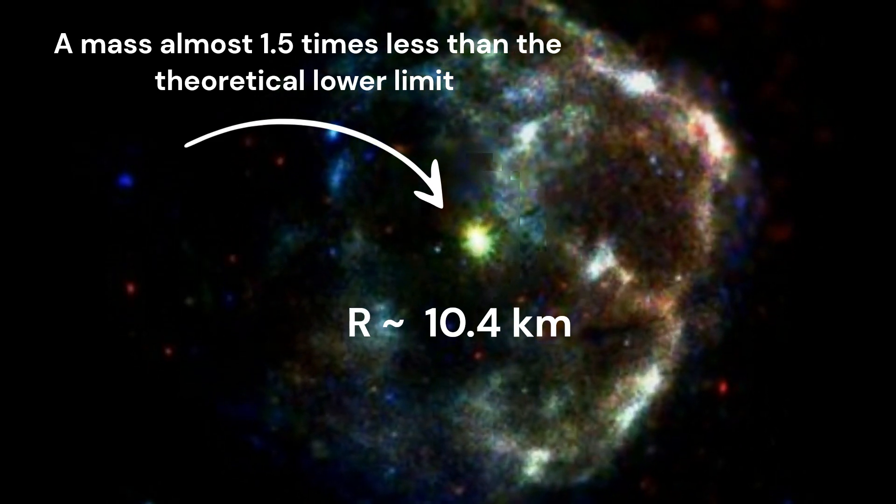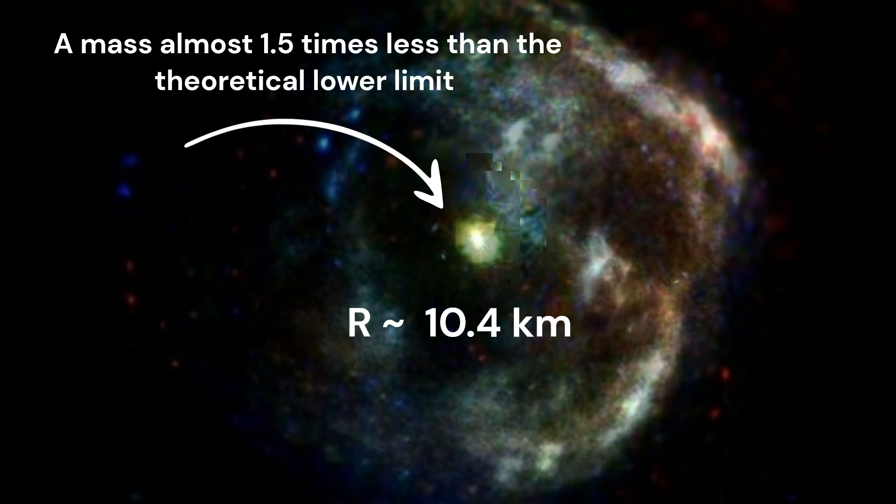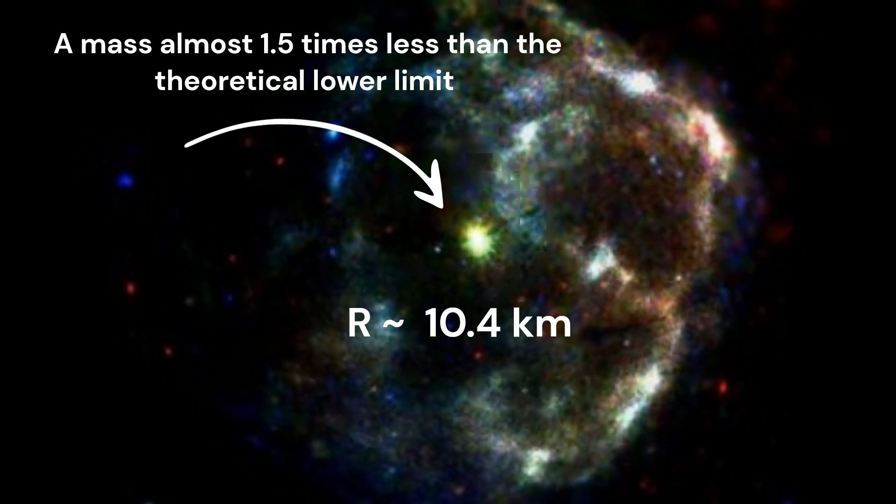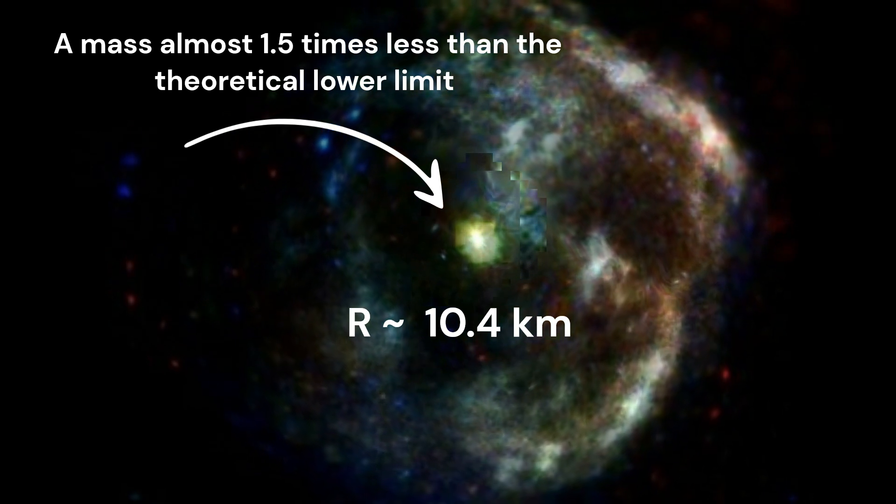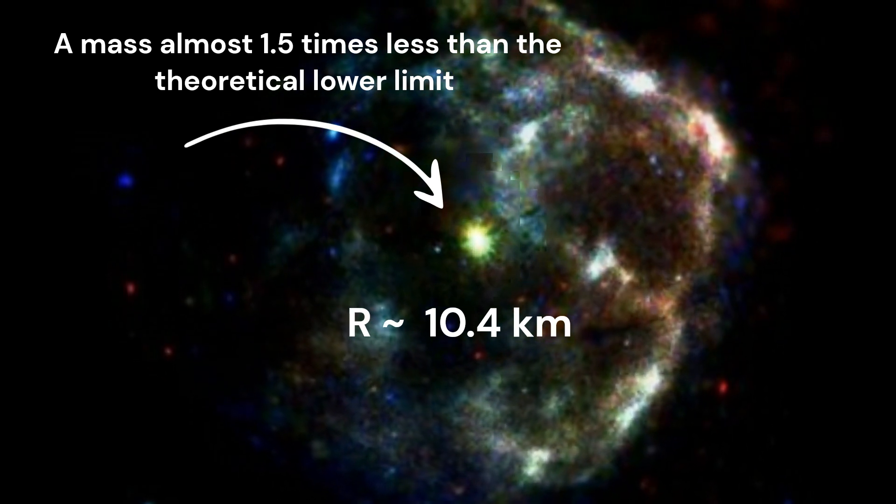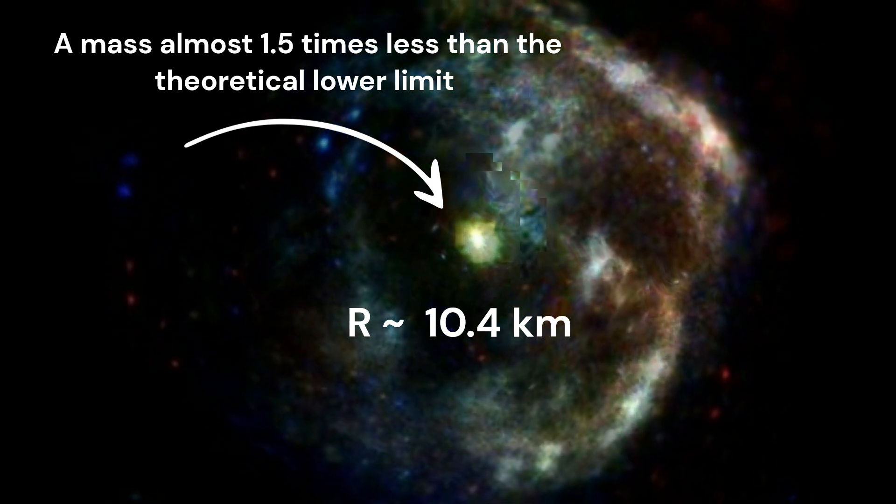However, the fact that it has a mass that is only 77% that of our sun perplexed astronomers because it is almost 1.5 times less than the theoretical lower limit. The astrophysicists put forth two hypotheses to explain why the measured value of a neutron star's mass differed from what was predicted theoretically.